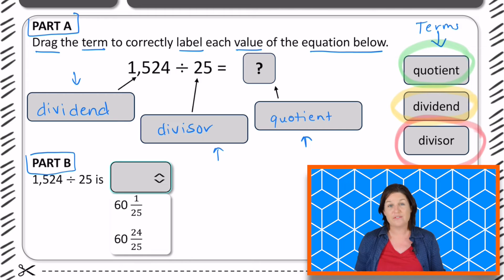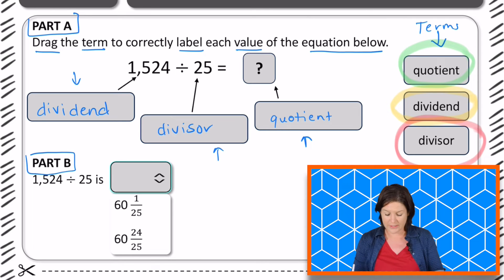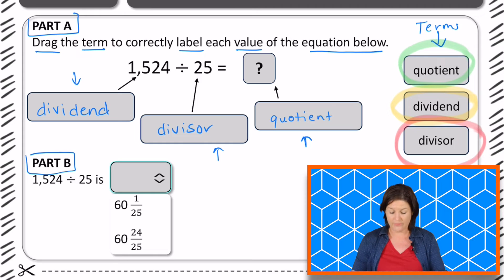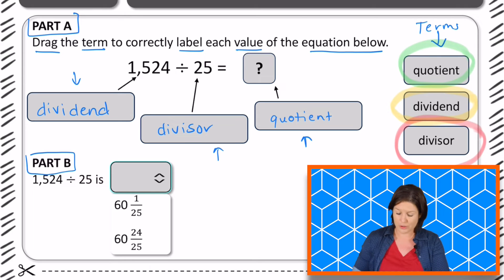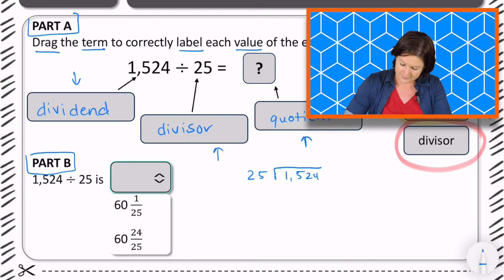Part B says 1,524 divided by 25 is — so now we're not labeling the pieces, we're actually trying to figure out what the quotient is. You could have selected any strategy to solve this problem. I'm going to go with the partial quotients method. So I've got my divisor and my dividend here. I know that 25 times 4 is 100.